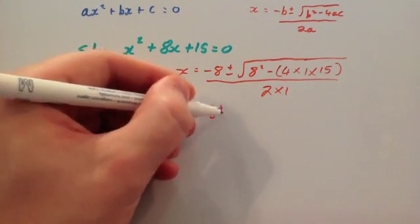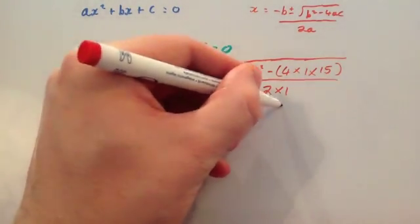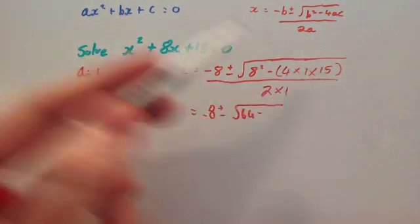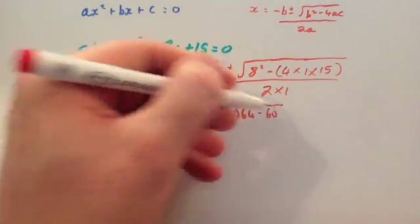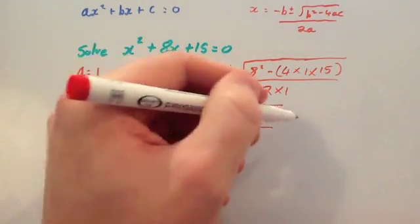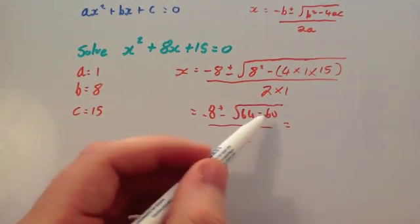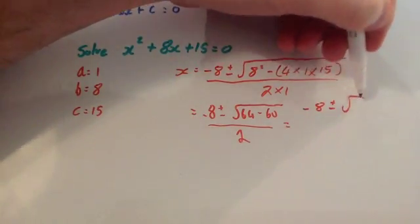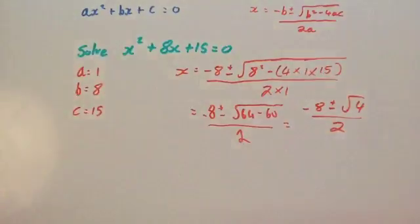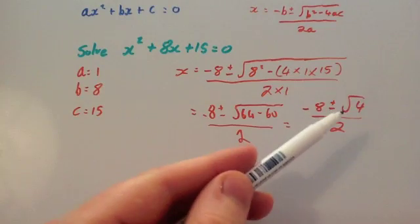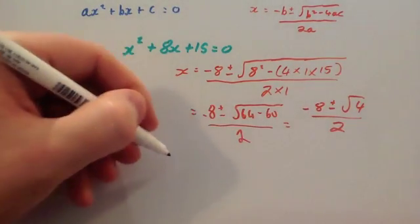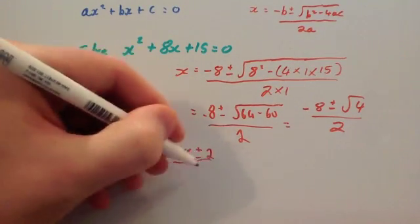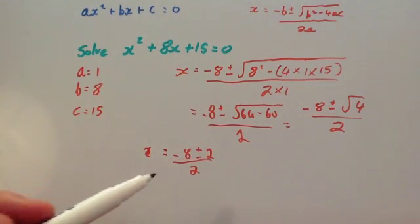So negative 8 plus or minus the square root of: 8 squared is 64, minus 4 times 1 is 4 times 15 is 60, so minus 60, all divided by 2. Working out the part under the square root: 64 take away 60 is 4. So you get minus 8 plus or minus the square root of 4 all divided by 2. The square root of 4 is 2, so x equals minus 8 plus or minus 2, divided by 2.